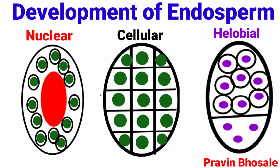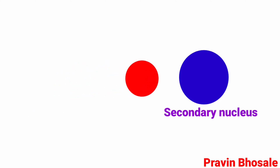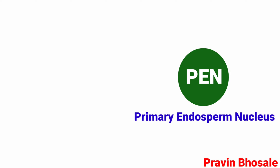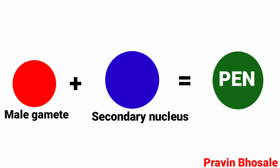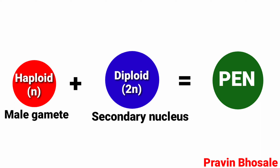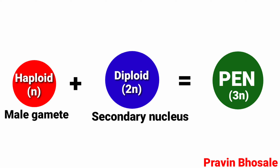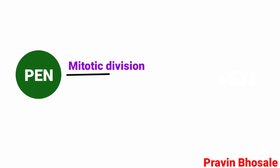Development of endosperm: when the second male gamete fuses with the secondary nucleus, it forms the primary endosperm nucleus (PEN). Here the male gamete is haploid and the secondary nucleus is diploid. So when fusion takes place, the primary endosperm nucleus formed is triploid.